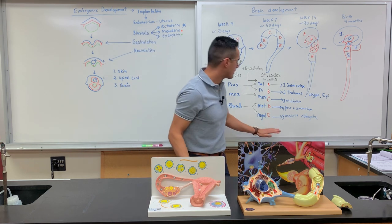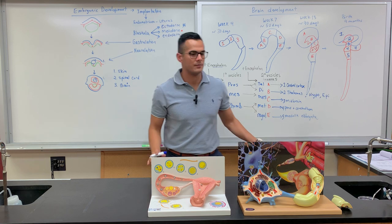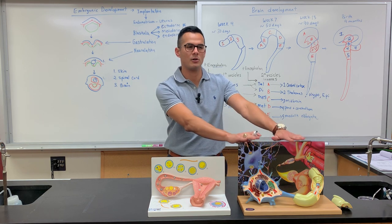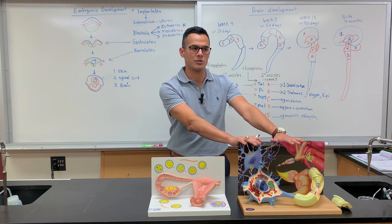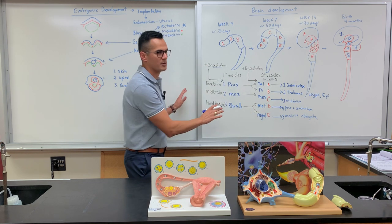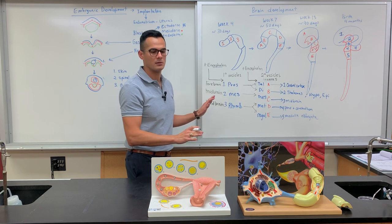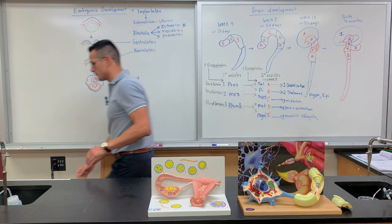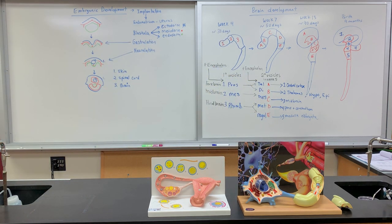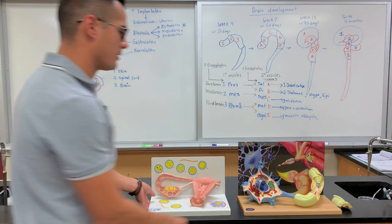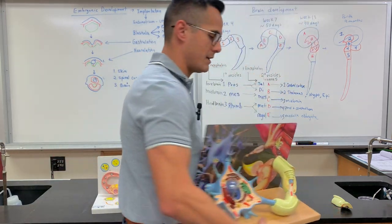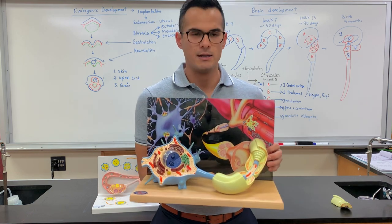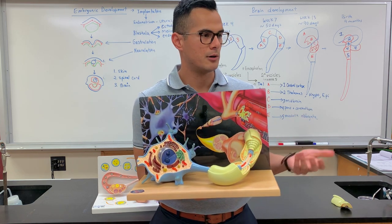That concludes the portion on brain development. Now I still want to go over the neuron model and the Schwann cell. So let's look at some of the structures on our neuron model. This model here is a multipolar motor neuron.